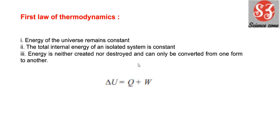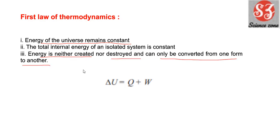Next है first law of thermodynamics। First law of thermodynamics को इन तीन statements में से कोई भी statement के terms में कह सकते हो। पहला: energy of the universe हमेशा constant होती है — ना आप energy को create कर सकते हैं ना destroy कर सकते हैं, उसे सिर्फ एक form से दूसरे form में convert कर सकते हैं। दूसरा: total internal energy of an isolated system is always constant। First law of thermodynamics represent होता है as: ΔU = q + w।